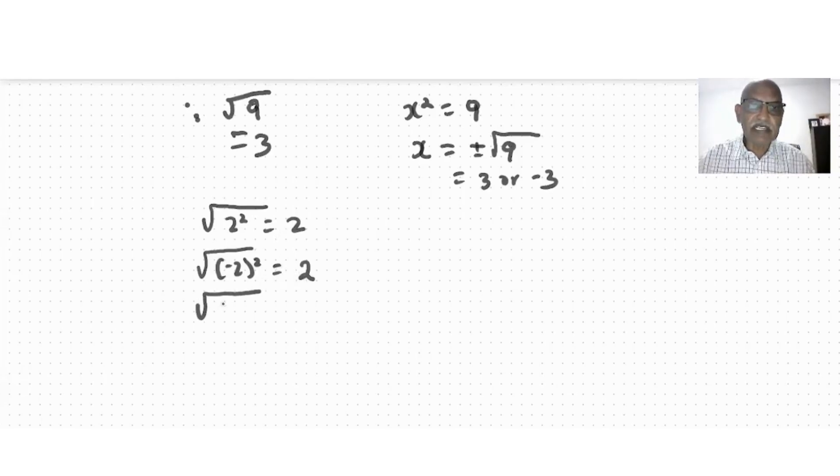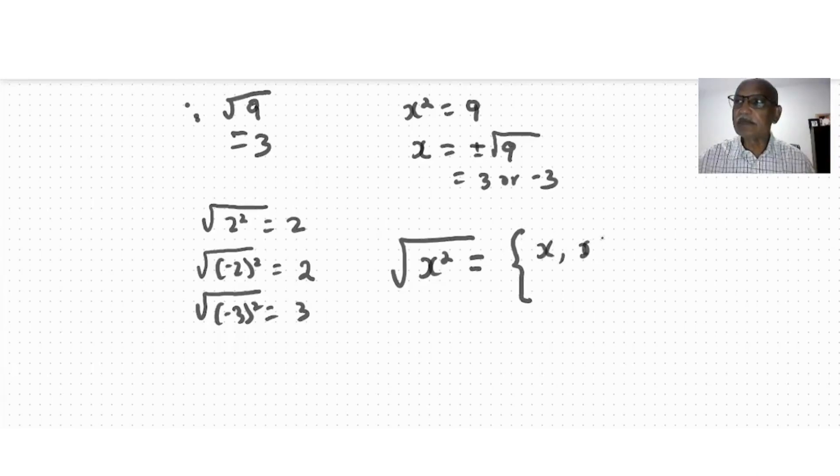If I have square root of negative 3 squared, it will be equal to 3, not negative 3. So we say whenever I have a square root of x squared, my answer will always be absolute value. Square root of x squared is x when x is greater than or equal to 0, or it can be negative x when x is less than 0.